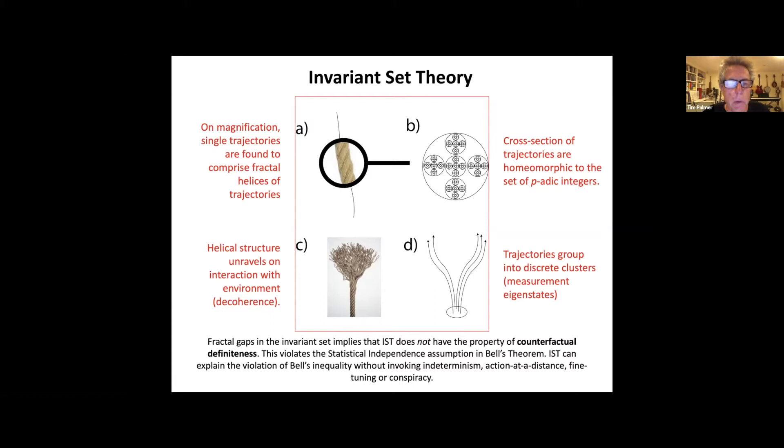In part c I show that this structure can unravel when the system under interest interacts with the environment, and that can be thought of as corresponding to the decoherence of quantum systems. Finally, Invariant Set Theory proposes that these trajectories ultimately group into discrete clusters which you would identify as measurement eigenstates. The key point about all of this when one talks about fractals is that there are gaps in between the trajectory elements associated with the fractals.